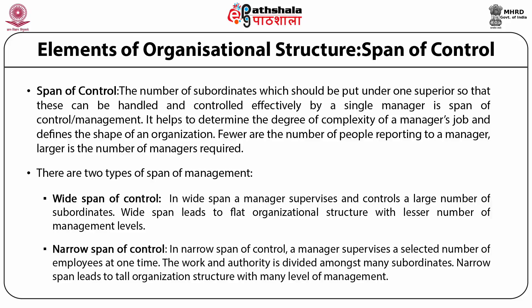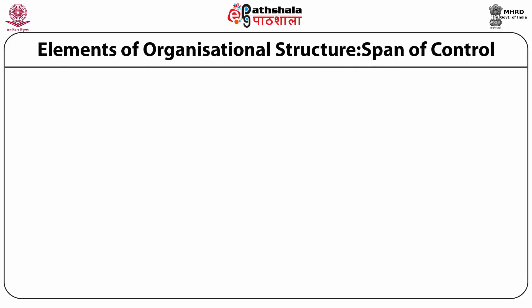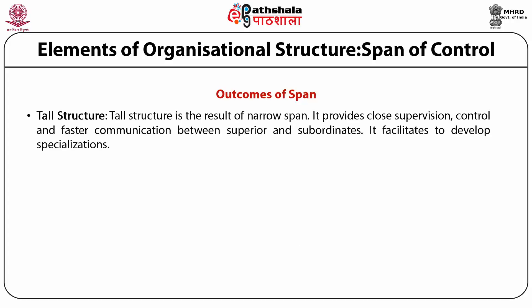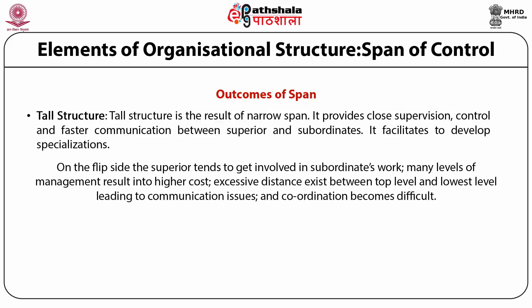In narrow span, a manager supervises a selected number of employees at a time, and the work and authority is divided among many subordinates. Narrow span leads to a tall structure with many levels of management. There are two outcomes of span of management: tall structure and flat structure. Tall structure results from narrow span — it provides close supervision, control and faster communication between superior and subordinate, and facilitates specialization. However, a superior tends to get involved in a subordinate's work, many levels of management result in higher costs, and excessive distance between top and lowest levels leads to communication issues and coordination difficulties.